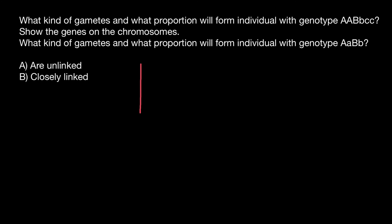Let's say this is one chromosome and this is another chromosome. This individual is homozygous for gene A, meaning each chromosome carries the dominant allele A. As for gene B, this individual is heterozygous — dominant allele B on one chromosome and recessive allele b on the other. And this individual is recessive for gene C, meaning recessive allele c is on each chromosome.